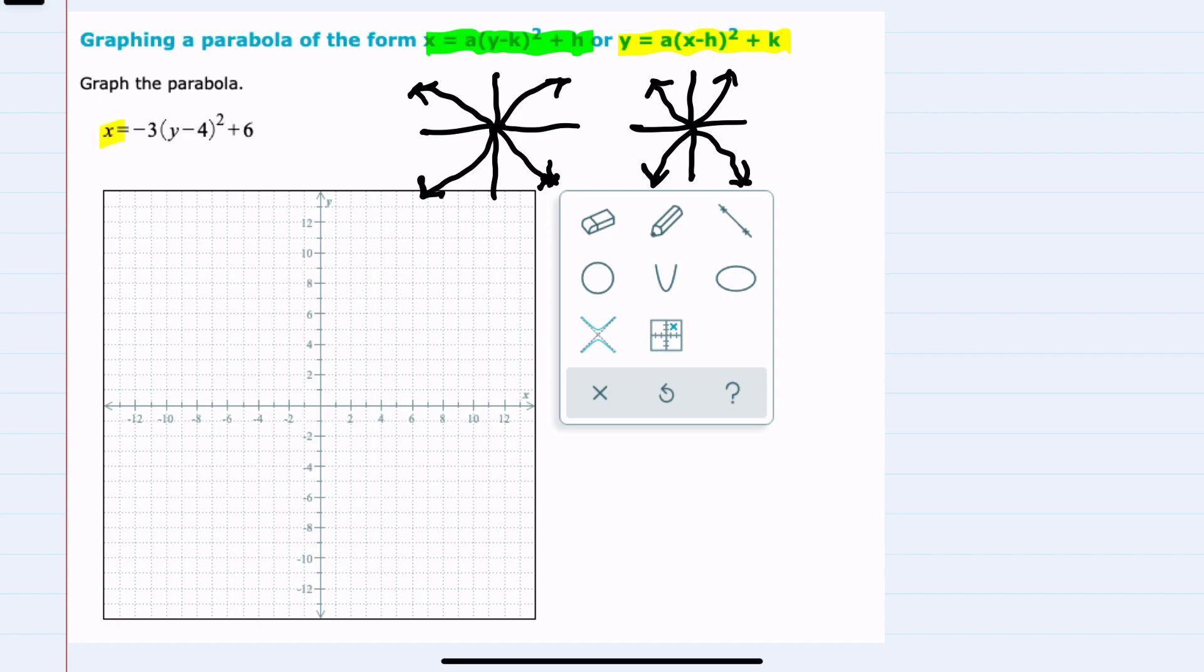For this example, we have the x variable, the one that's by itself. So that's going to be this variety. It's going to be opening left or right. Since a is negative, I can tell that it is going to be opening to the left.